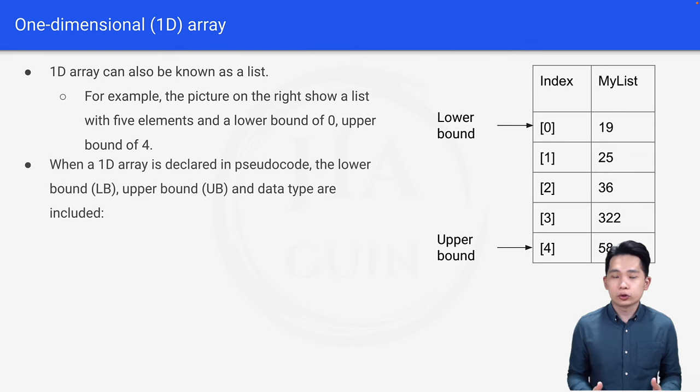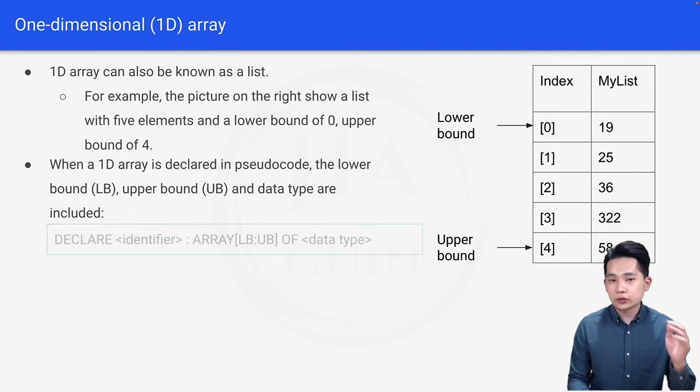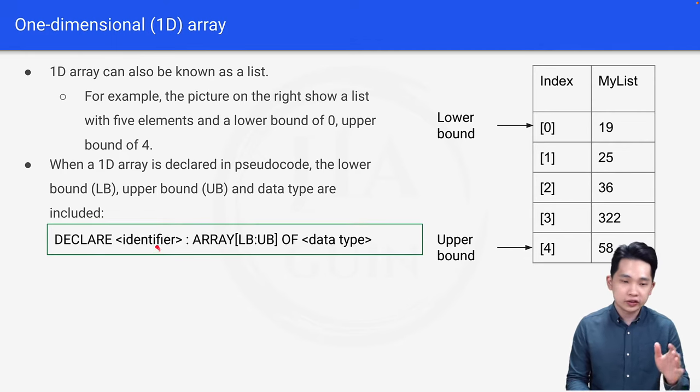When a 1D array is declared in pseudocode, the lower bound (LB), the upper bound (UB), and data type are always included. Let's look at the syntax. For example, DECLARE identifier—this is the array name—ARRAY[LB:UB] OF data type. This is how you declare a 1D array.